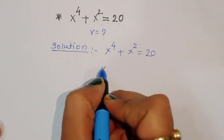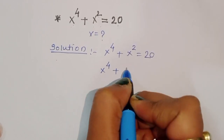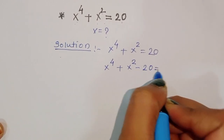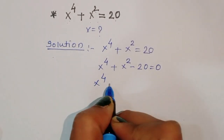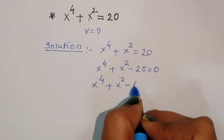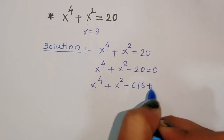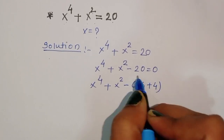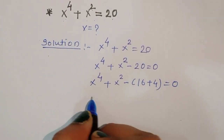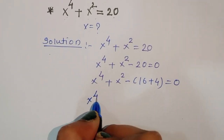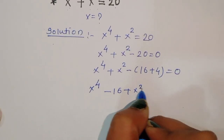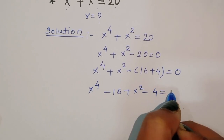We can write this as x power 4 plus x square minus 20 is equal to 0. Now, we can write 20 as 16 plus 4, so x power 4 plus x square minus 16 minus 4 is equal to 0. We can rearrange this as x power 4 minus 16 plus x square minus 4 is equal to 0.